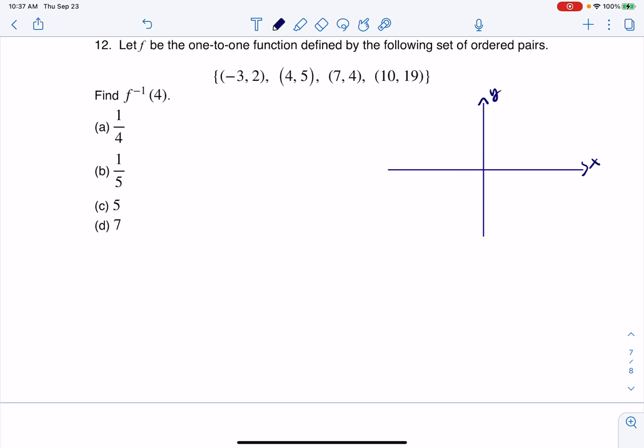Okay, so if I wanted to, I could say, well, negative three, two, there's an ordered pair. And again, you don't really need to graph this. I just like doing this stuff. Four, five might be up here.